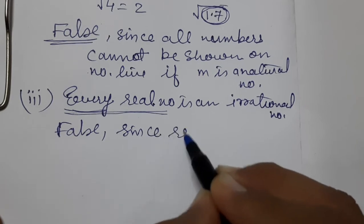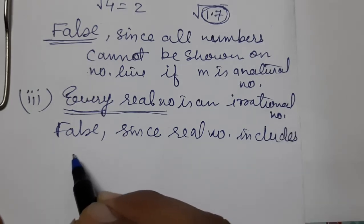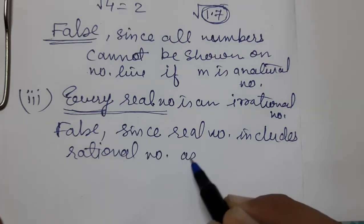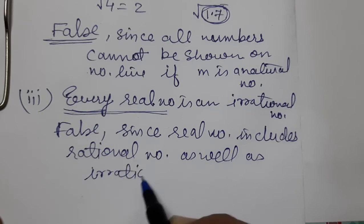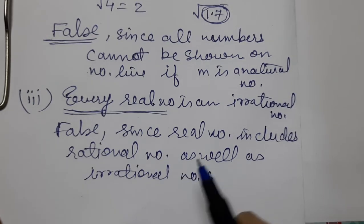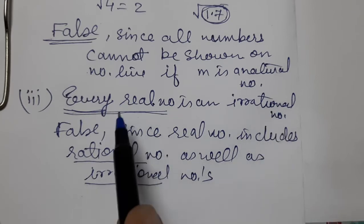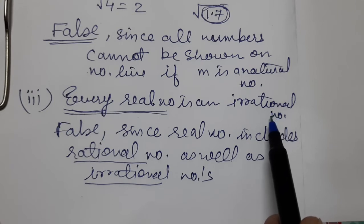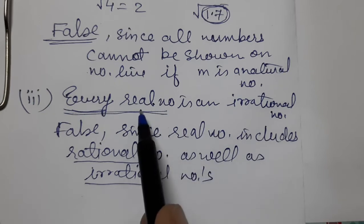Since real number includes rational as well as irrational numbers — every real number is irrational is FALSE. Rational numbers are also real, irrational numbers are also real.